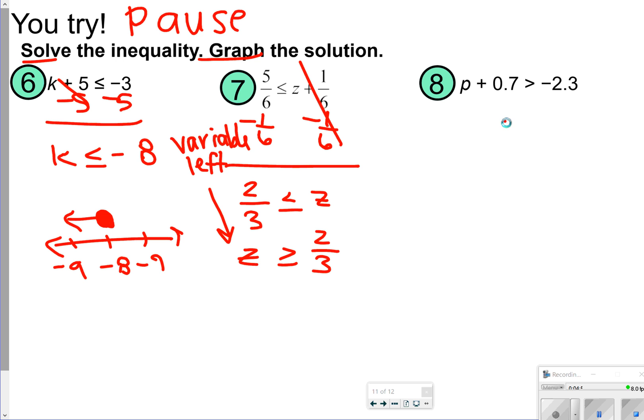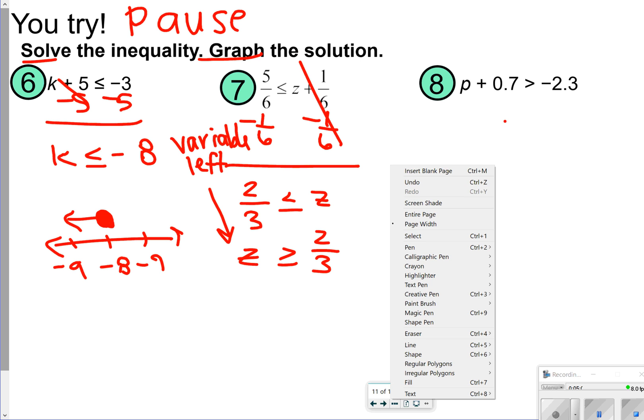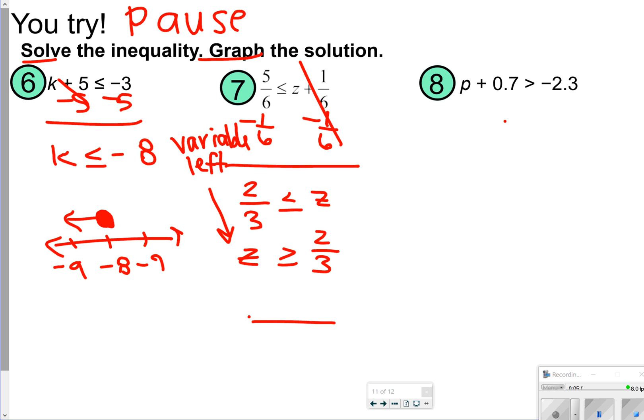Just as soon as my pen starts working here, there we go, sorry about that. I have 0, 2 thirds, and 1, a closed circle pointing to the right.